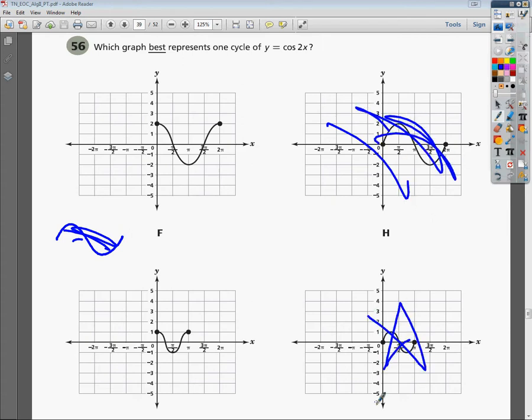The next thing you need to understand is how that 2 affects your graph. The cosine, by the way, looks much like this. And it should go from 0 to, in general case, if it's just cosine x, it goes from 0 to 2 pi.